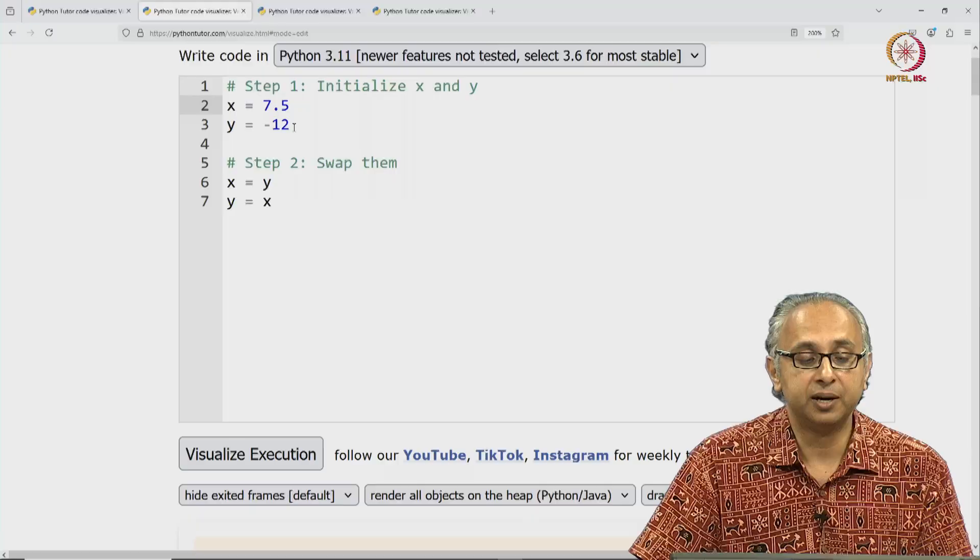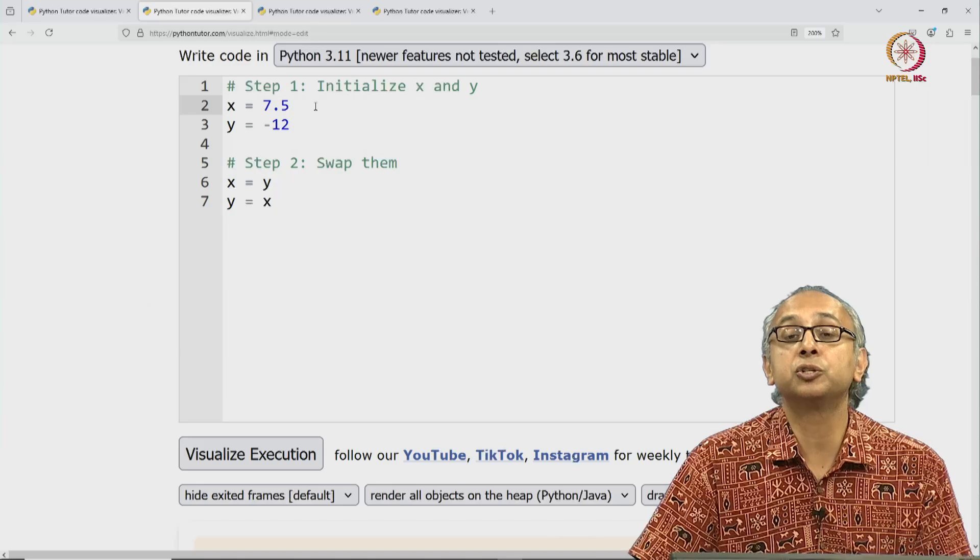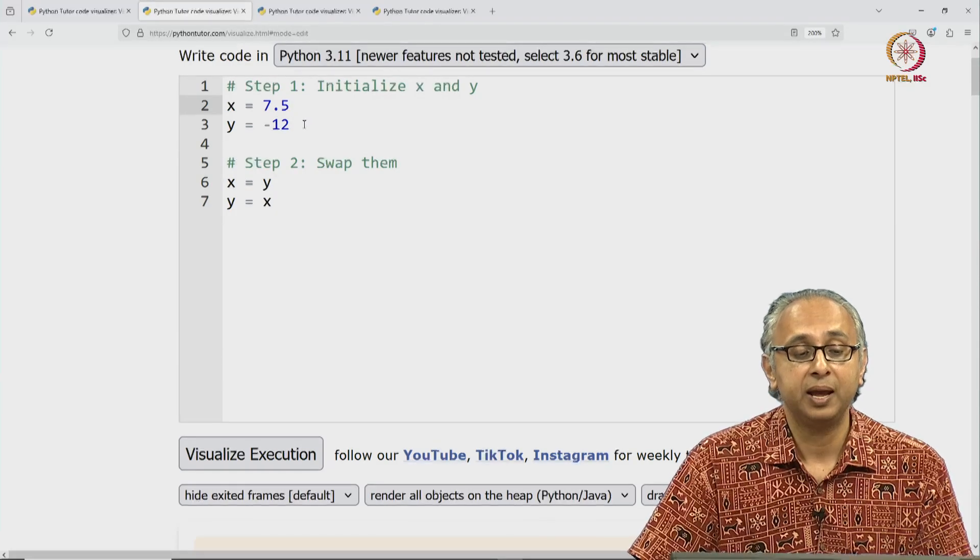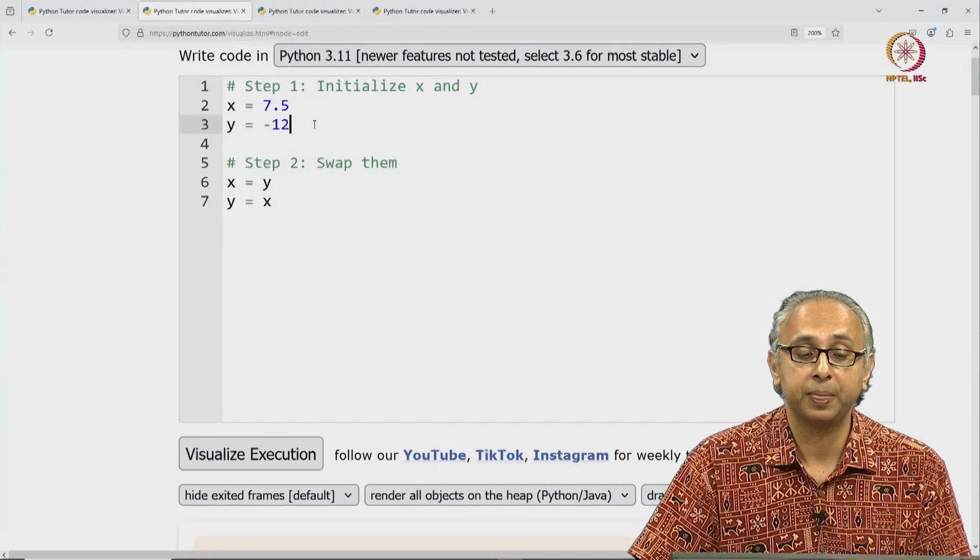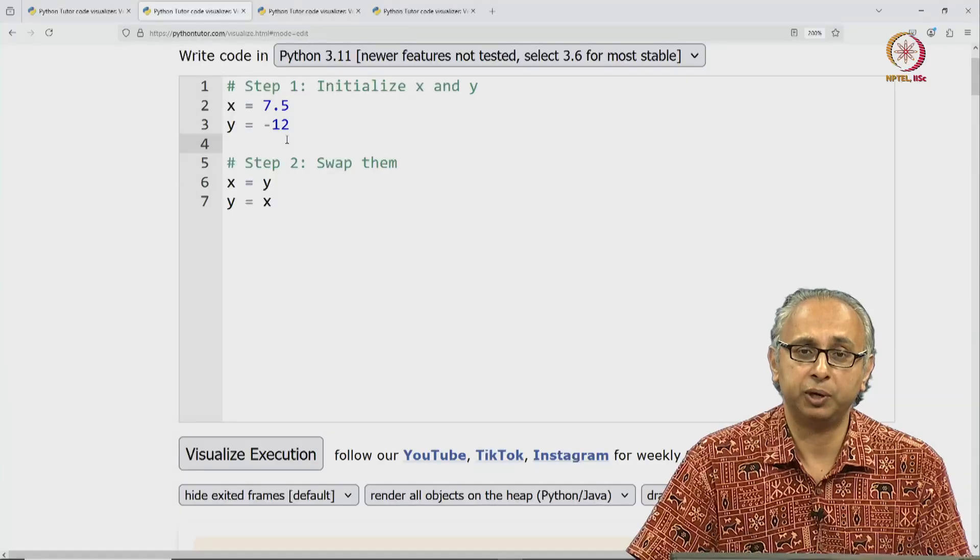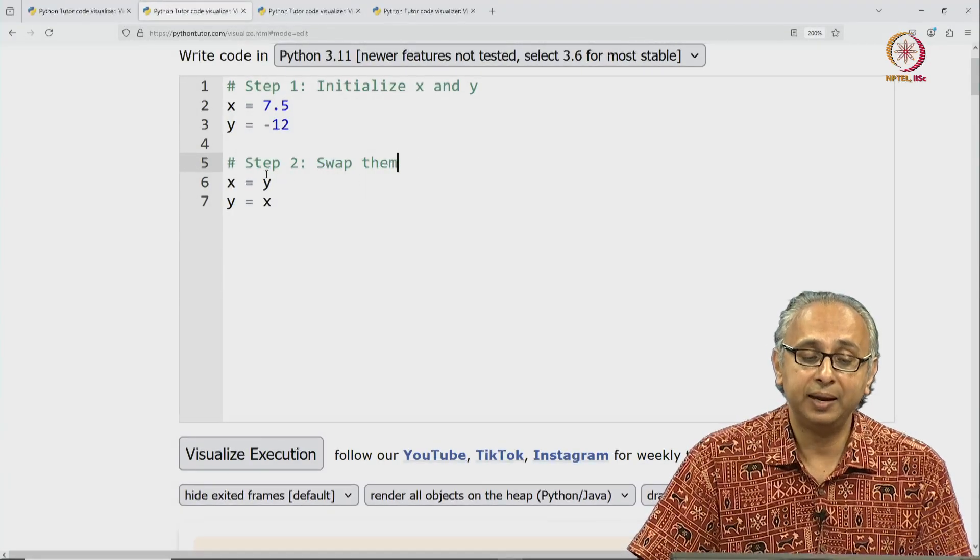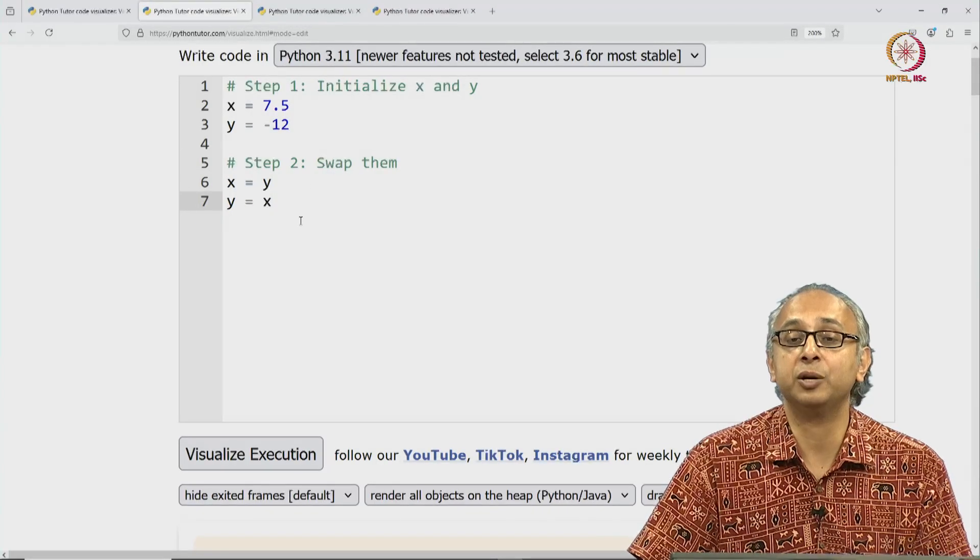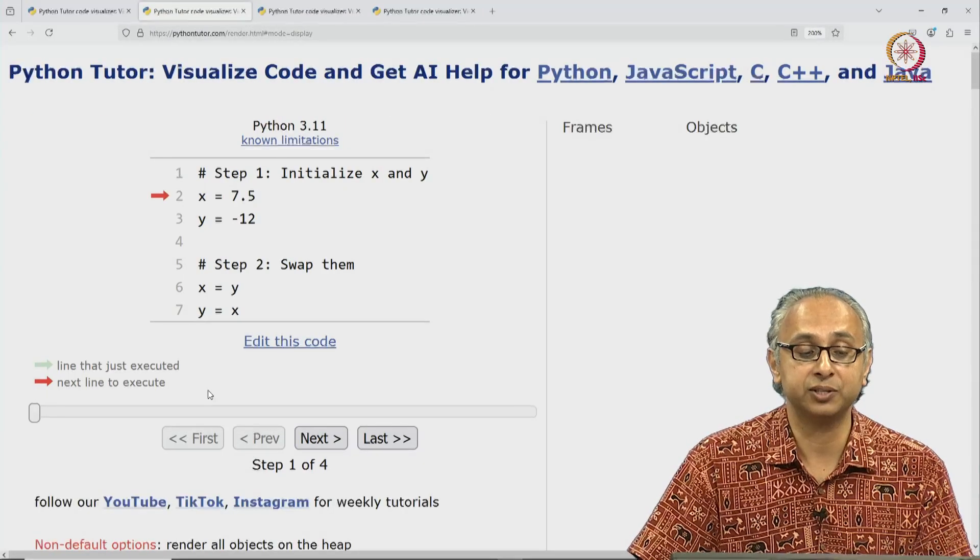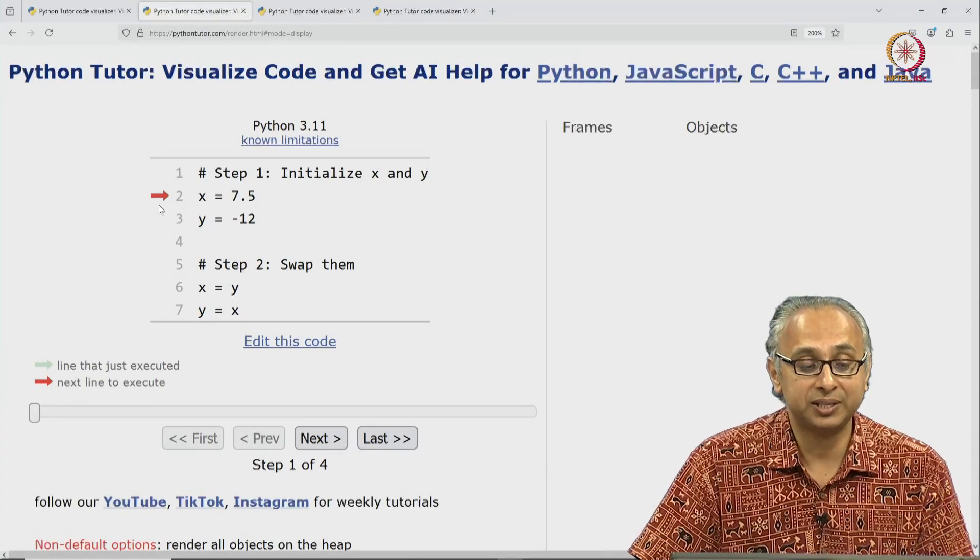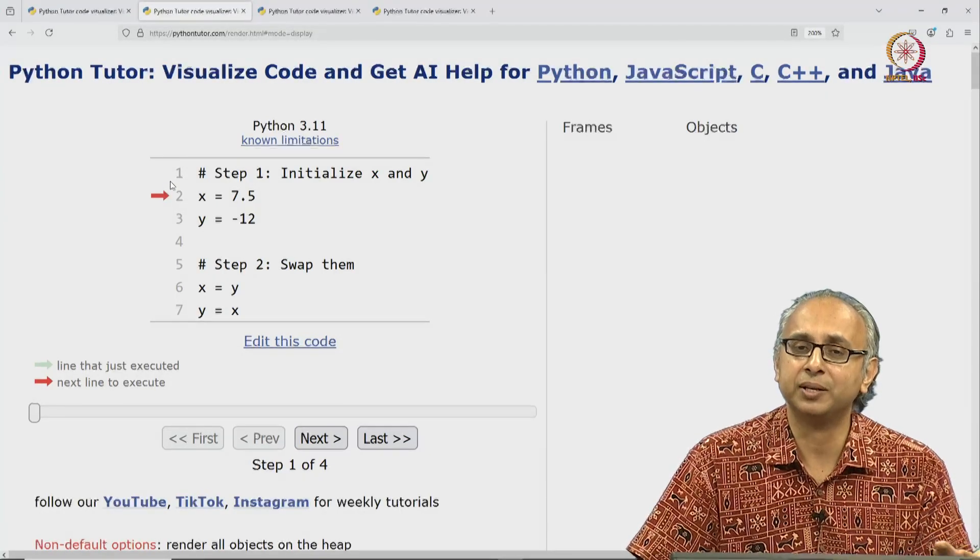The first two statements are simply assigning some initial values to X and Y. X is initialized to the float object 7.5 and Y is initialized to the integer object minus 12. Then we have a blank line which is also ignored. Then we have a comment which will also be ignored and then we want to swap these values. Notice this is the code that our friend was looking at. Let's click on visualize execution and observe how this code actually runs. Notice that the red arrow starts not at line one but at line two because line one is merely a comment so it is ignored.